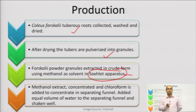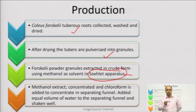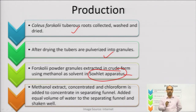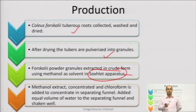The methanol extract obtained after Soxhlet extraction is concentrated under a rotary vacuum evaporator, converting it into a dried residue. To this dried residue, chloroform is added to dissolve the methanolic extract. After dissolving the extract in chloroform, the solution is taken into a separating funnel where equal volumes of water are added — for example, 150 ml of chloroform requires 150 ml of water — and the mixture is shaken well.